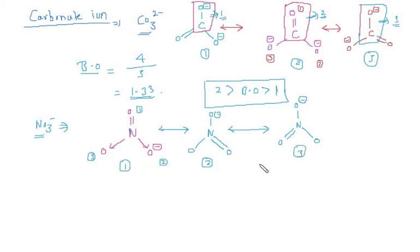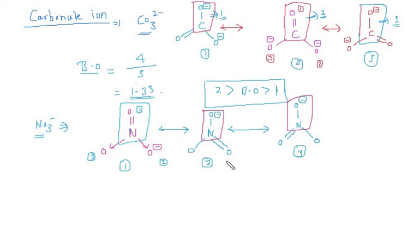There are three resonating structures in total. Selecting any two atoms and counting bonds across all structures: 2 + 2 = 4 total bonds. So the bond order is 4 divided by 3, which equals 1.33. The bond order of nitrate ion is also 1.33.